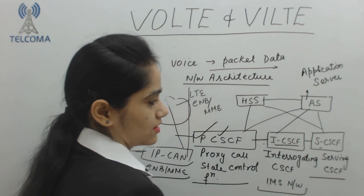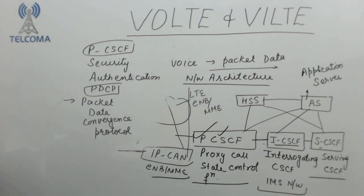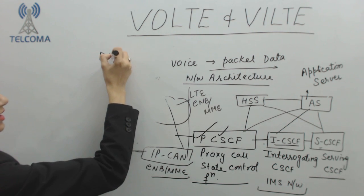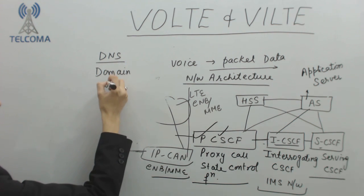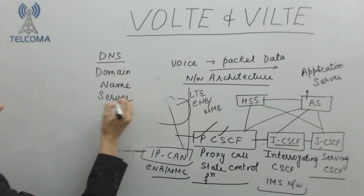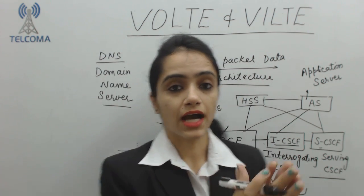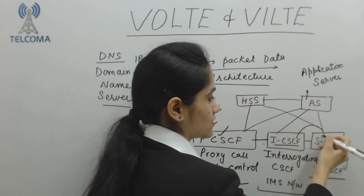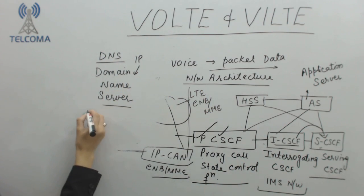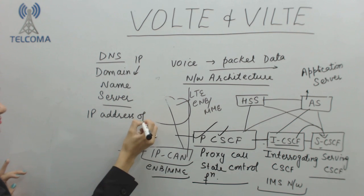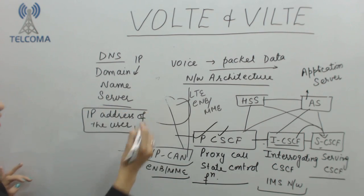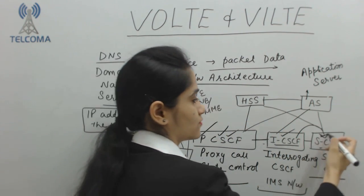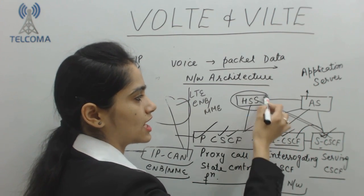Next is the Interrogating CSCF. ICSCF will allocate a proper DNS — Domain Name Server — giving a particular IP address in the domain name server. After that, we move to the Serving CSCF, which validates the IP addresses of users. After proxy, interrogating, and serving, we have authenticated ourselves and obtained an IP in DNS. IP addresses of users are saved, and simultaneously HSS tracks the location of the users.